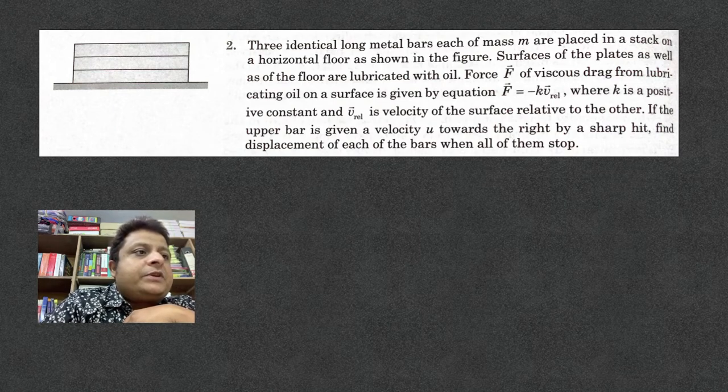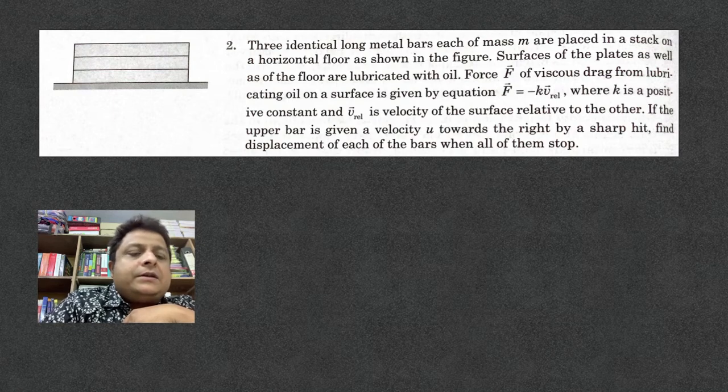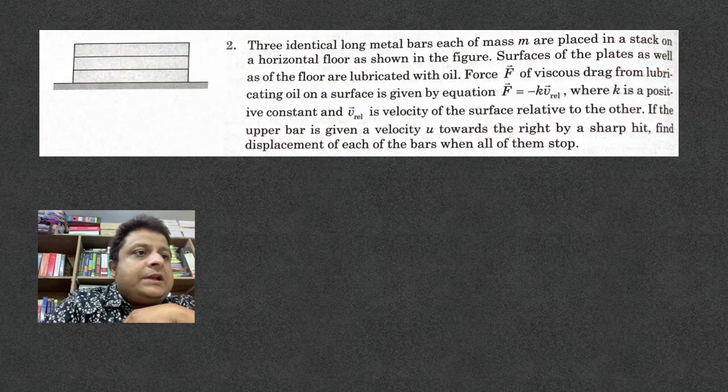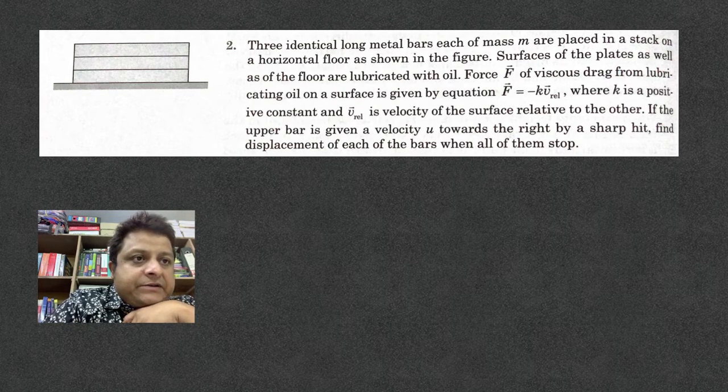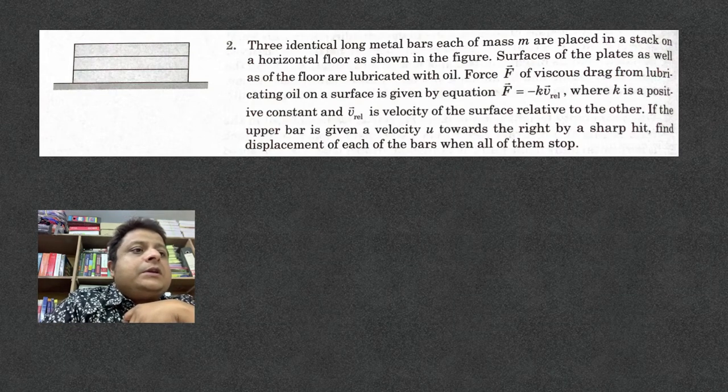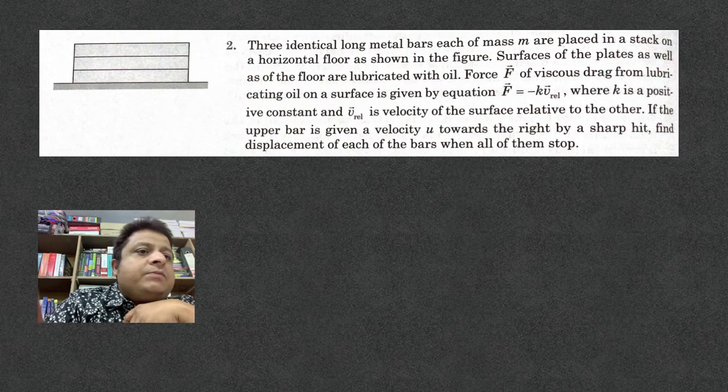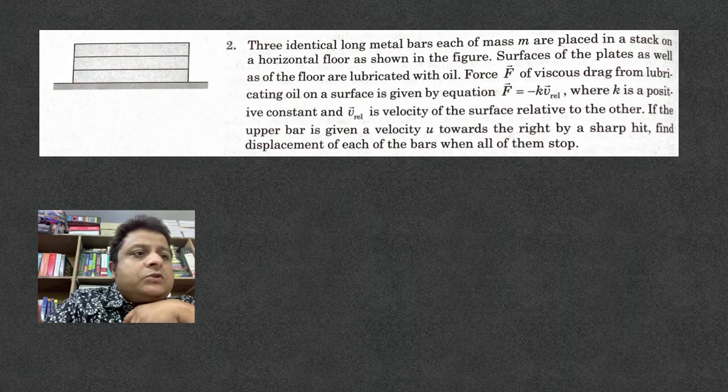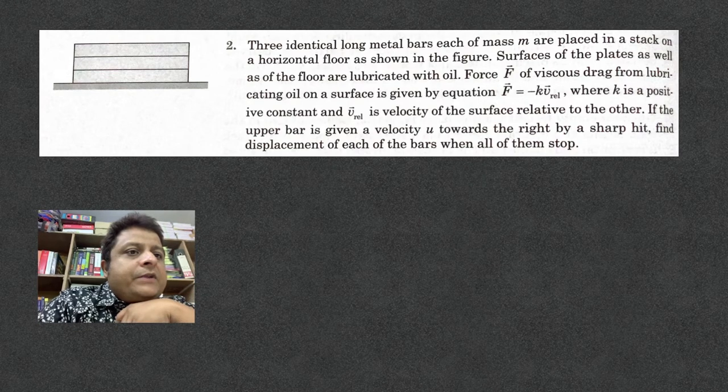Force F of viscous drag from lubricating oil on a surface is given by F = -kv_relative, where k is a positive constant and v_relative is the velocity of the surface relative to the other. If the upper bar is given a velocity u towards the right by a sharp hit, find the displacement of each of the bars when all of them stop. All of them will stop simultaneously, and you have to find displacement of each bar when all of them stop.